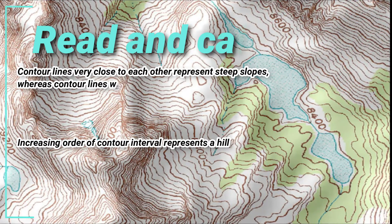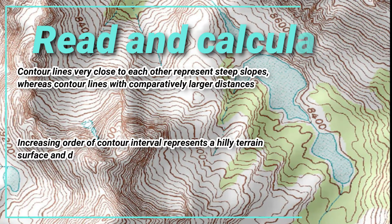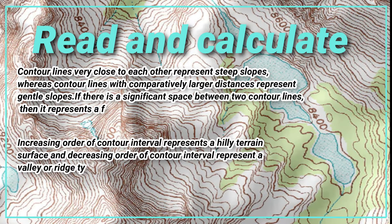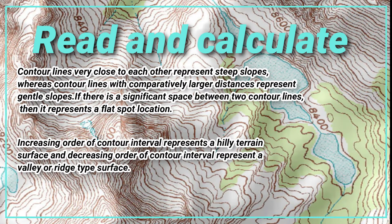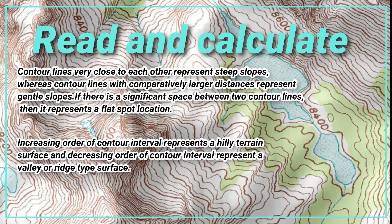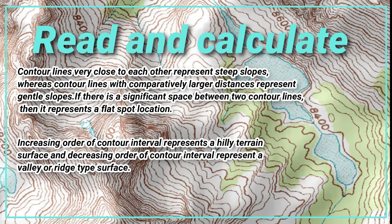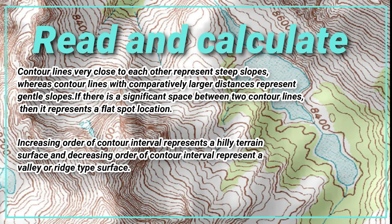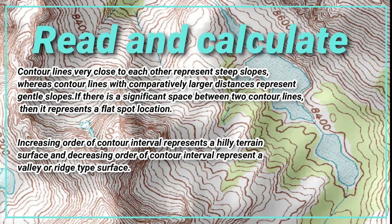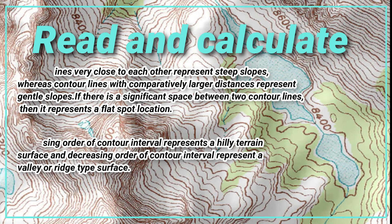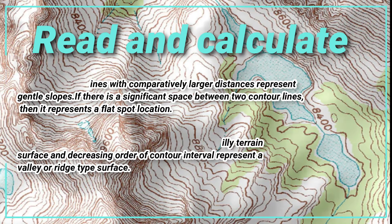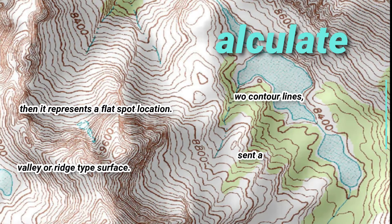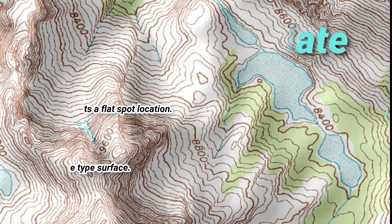Contour lines very close to each other represent steep slopes, whereas contour lines with comparatively larger distances represent gentle slopes. If there is a significant space between two contour lines, it represents a flat spot location. An increasing order of contour interval represents a hilly terrain surface, while a decreasing order represents a valley or ridge type surface.